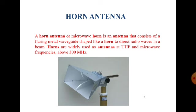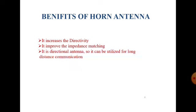This happens because the open circuit is a discontinuity which matches the waveguide to open space very poorly. Hence, to overcome this difficulty, the mouth of the waveguide is opened out, which assumes the shape of an electromagnetic horn, as we can also see from the picture. Here we have some benefits of horn antenna.